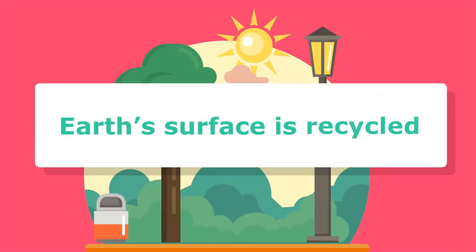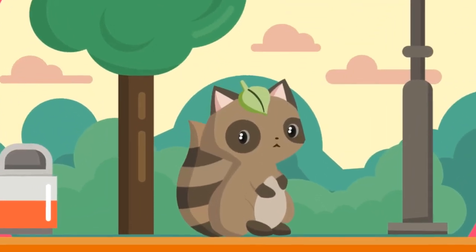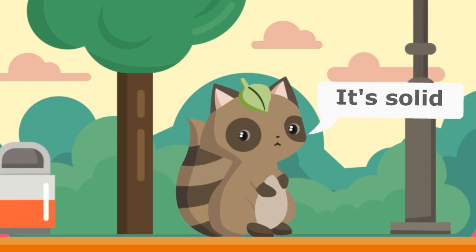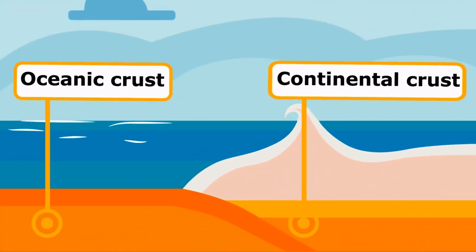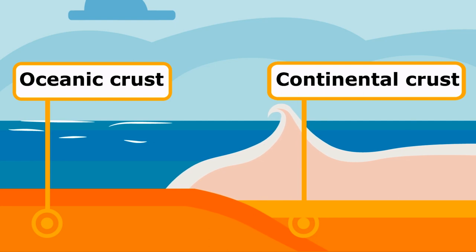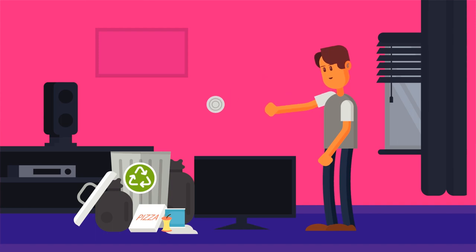Earth's surface is recycled. Our planet might seem solid and sturdy, but it's been going through the same regeneration process for over 500 million years. Oceanic crust is pressed under continental crust, creating pressure under the world's volcanoes. This results in the replacement of a good chunk of the surface. Makes you want to think twice about recycling your trash, huh?